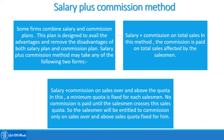The third method is the salary plus commission method. Some firms combine salary and commission plans together. This plan is designed to avoid the disadvantages of both the salary plan and the commission plan. The salary plus commission method may take either of two forms: salary plus commission on total sales, where commission is paid on the total sales affected by the salesman.